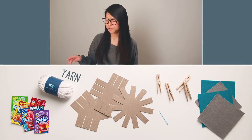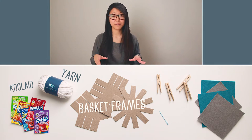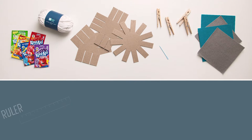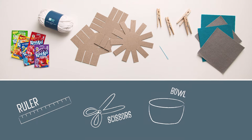For this project, you'll need t-shirt yarn, Kool-Aid, basket weaving frames, clothespins, a yarn needle, and felt sheets. You'll also need a ruler, scissors, a bowl, and tape.